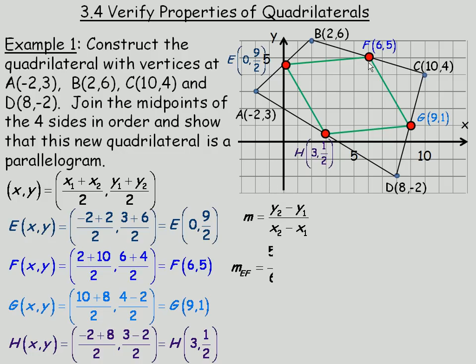So we are going to start with EF. So using the slope formula, 5 minus 9/2 in the numerator, and 6 minus 0 in the denominator. Now 5 is the same as 10/2. So 10/2 minus 9/2 is 1/2. 6 minus 0 is 6. Now the way you divide 1/2 by 6, remember this means division here, is you take the numerator, the 1/2, and multiply it by the reciprocal of the denominator. The reciprocal of 6 is 1/6. So 1/2 times 1/6 multiplies to 1/12.